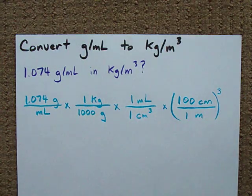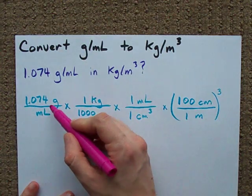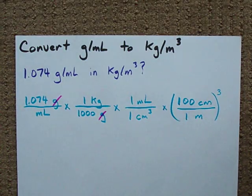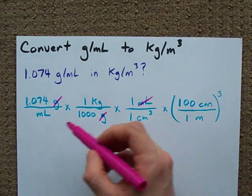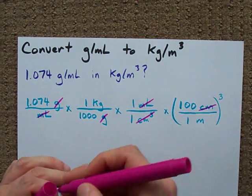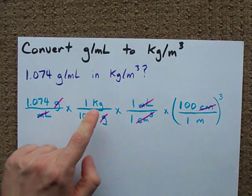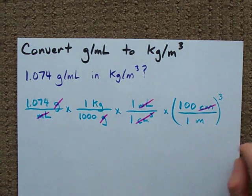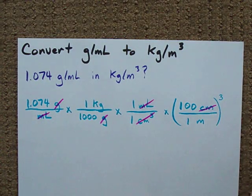Let me show you how these units cancel out. Grams cancels with grams. Milliliters cancels with milliliters. Centimeters cubed cancels with centimeters cubed. And what I end up with is kilograms on top, meters cubed on bottom.